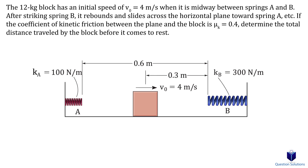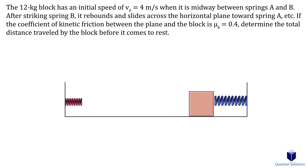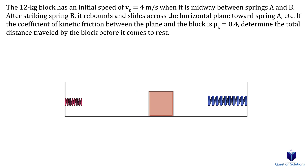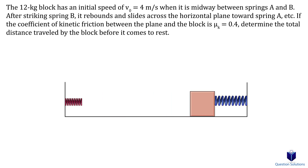Let's take a look at one last example involving springs. We need to find the total distance traveled by the block. There are two ways to approach this: first, assume the block hits spring B, bounces back, and stops before reaching spring A; or, assume it hits spring B, slides all the way to spring A, and then comes back and stops. We will assume the first condition and verify it. If it's true, that's less work; otherwise, we recalculate.